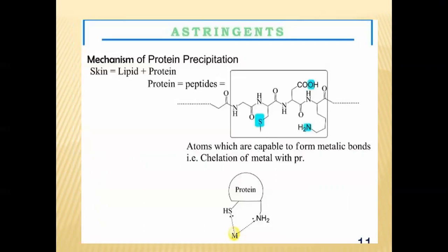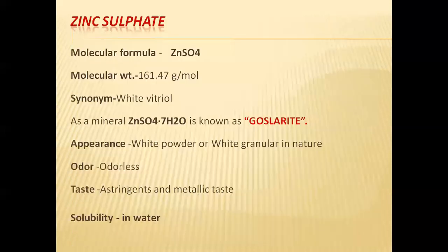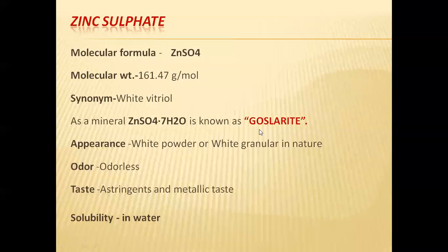The mechanism of protein precipitation: skin is composed of lipid plus protein. The proteins form peptide bonds and metallic bonds, resulting in protein precipitation. Now, which inorganic agents are used as astringents? First is zinc sulfate and second is potash alum. We will start with zinc sulfate. The molecular formula for zinc sulfate is ZnSO₄. In hydrous form it is ZnSO₄·H₂O, while anhydrous form is ZnSO₄. The molecular weight is 161.47 g/mol.